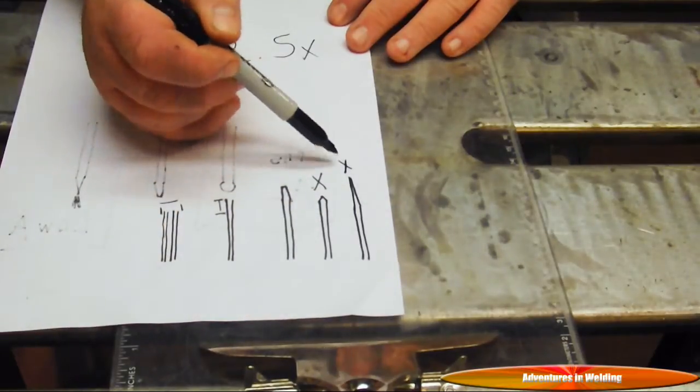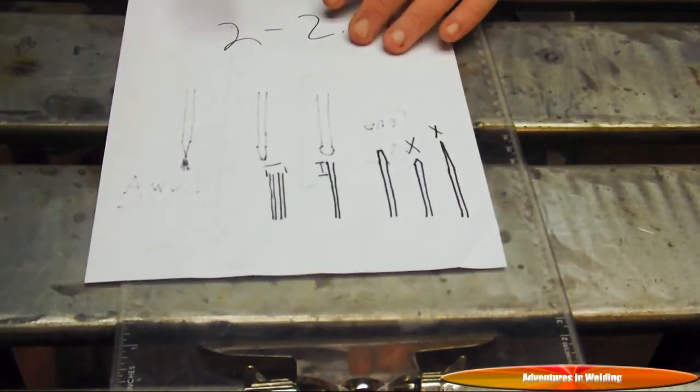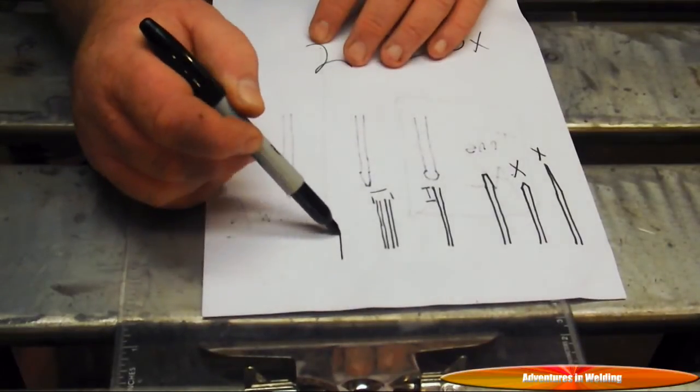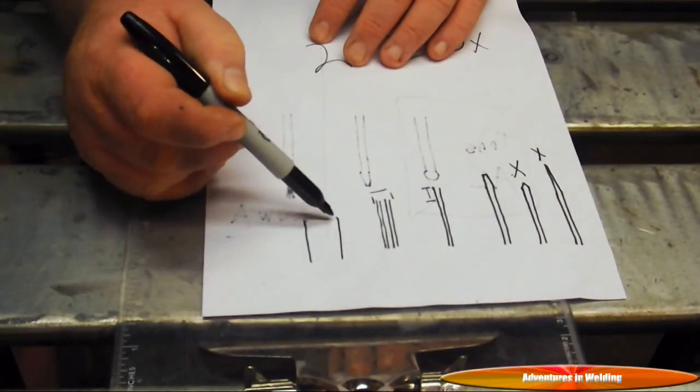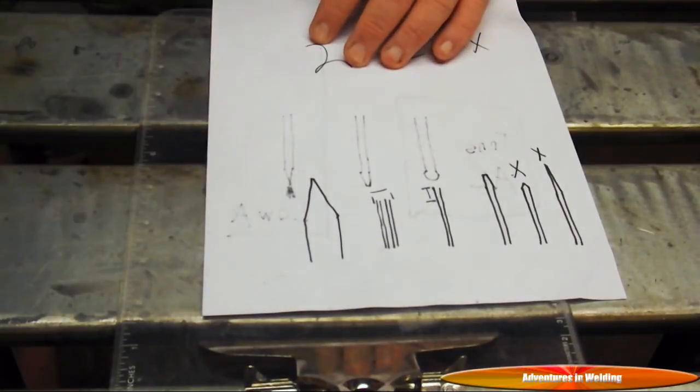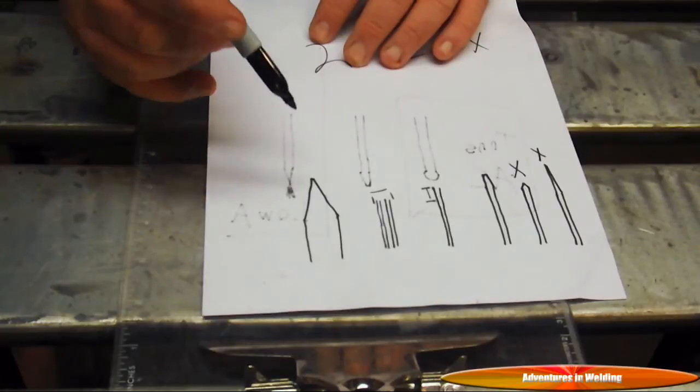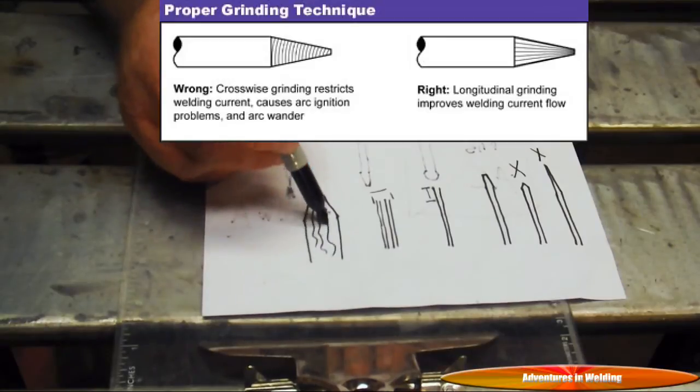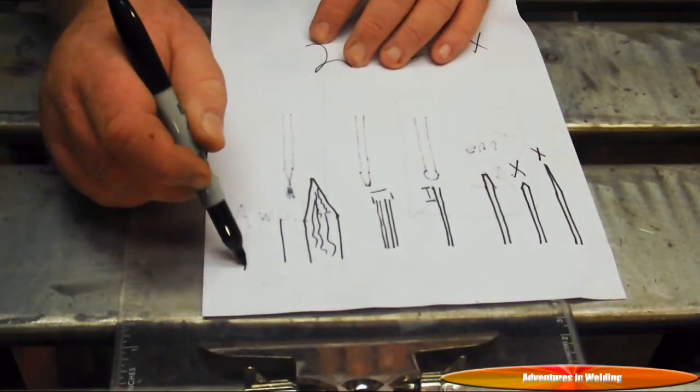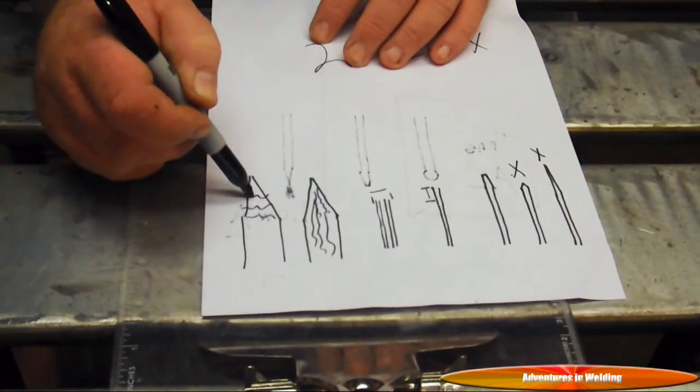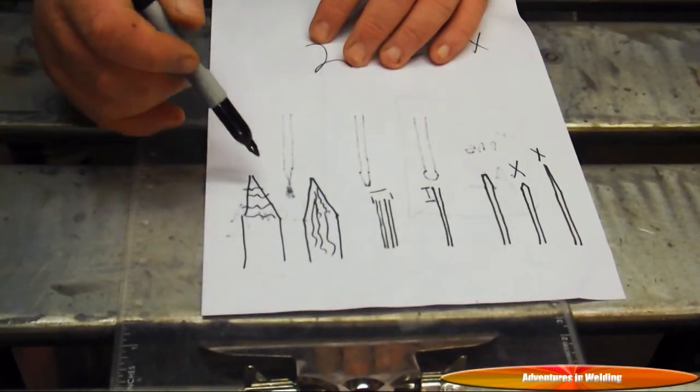And the final thing I want to talk about is that when you grind your point, this is let's say this is scaled up so we can get a better look, you want your grinding marks to run the length of the electrode. You do not want your grinding marks to run across the electrode. That's going to cause arc wandering and all sorts of ugliness.